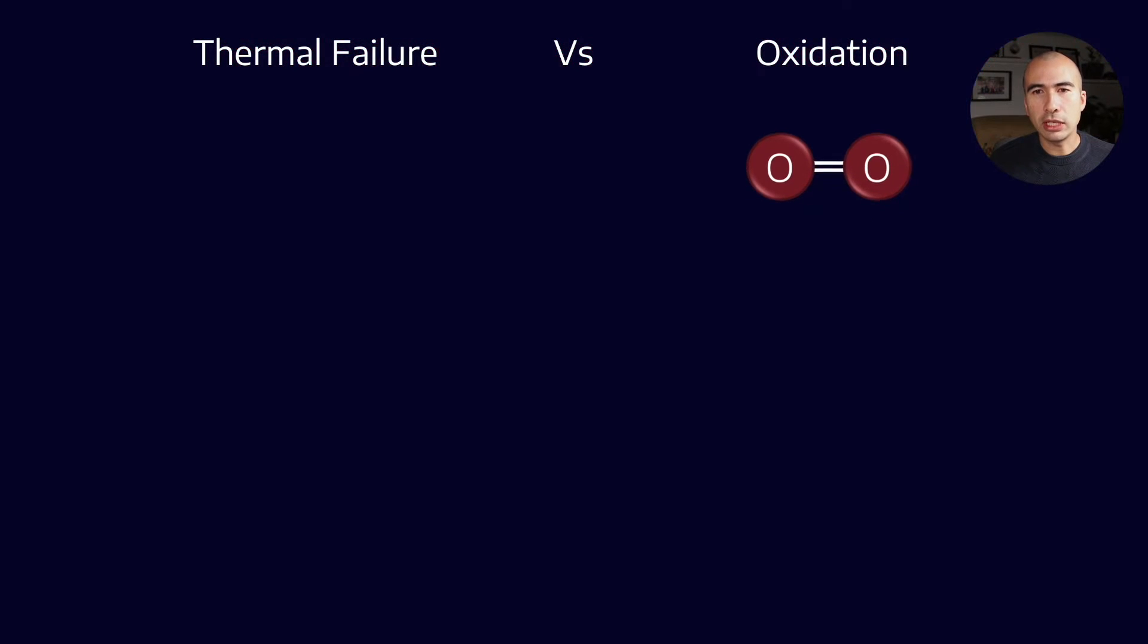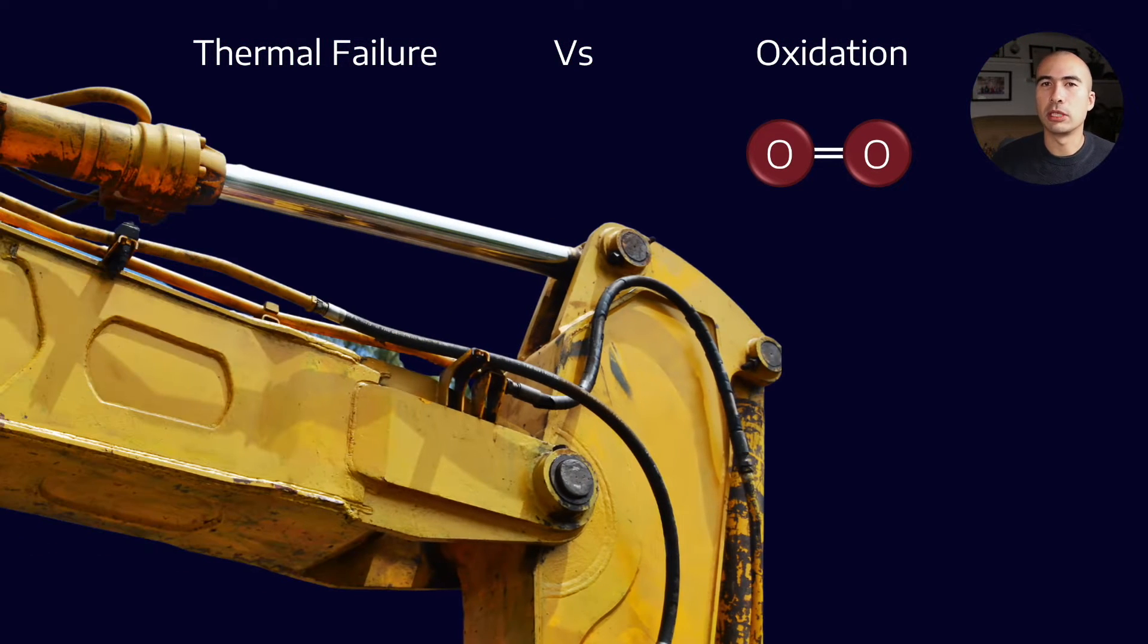Where would you see thermal failure? Thermal failure would typically happen in something like a closed system where you have a closed set of hydraulics or a closed thermal oil system. There's not really that ingress of oxygen into the system, so it's operating at very high temperatures and you get thermal breakdown.